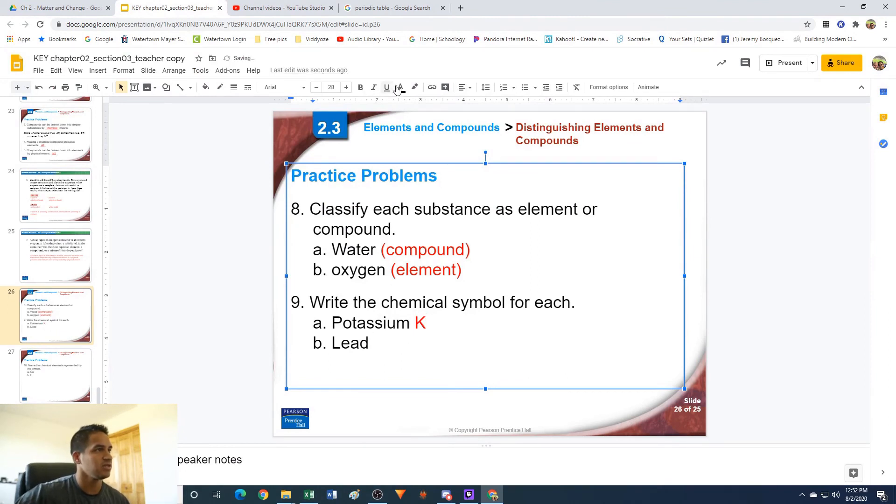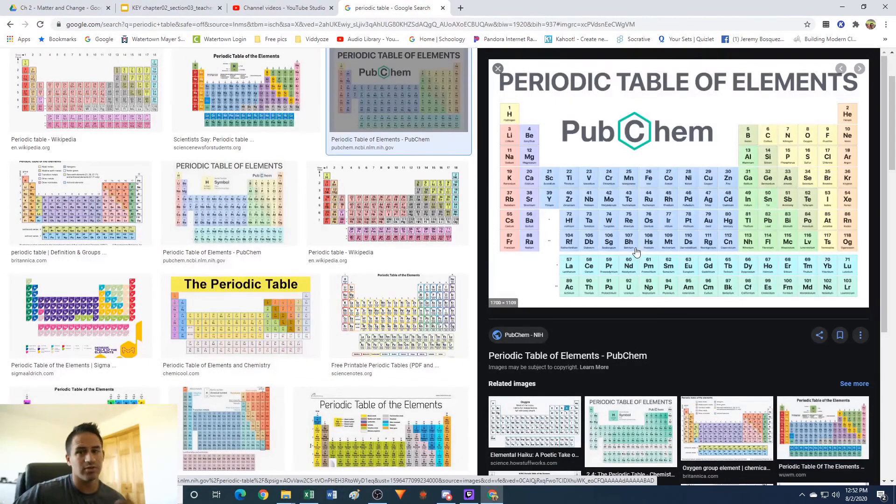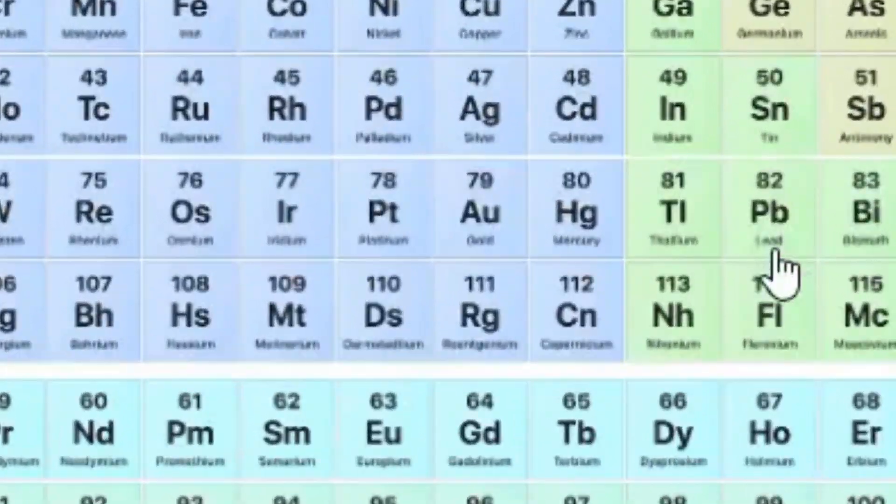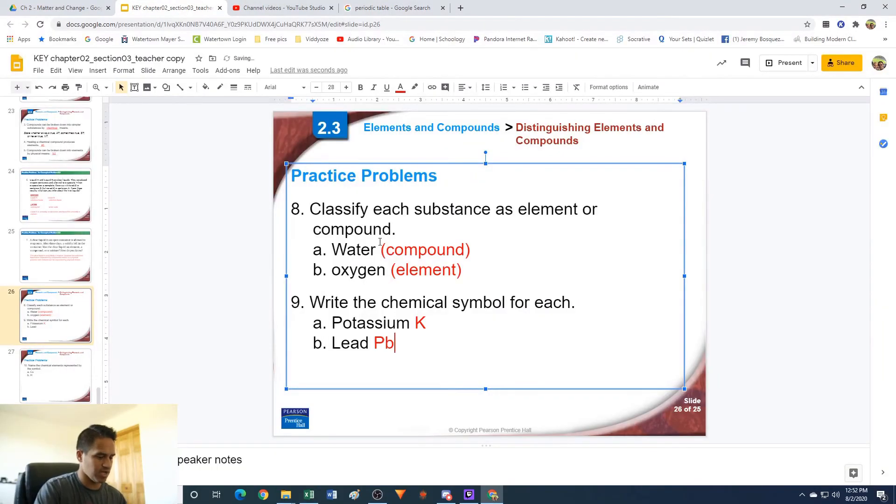As for lead, again we can take a look at our periodic table. It might take you some time to look and find it, but lead is right here, PB, has a symbol of PB. So capital P, lowercase B.